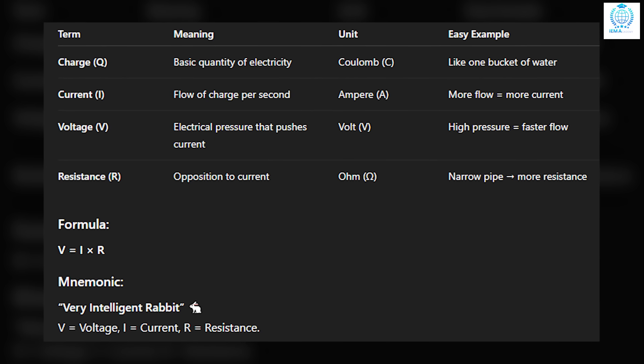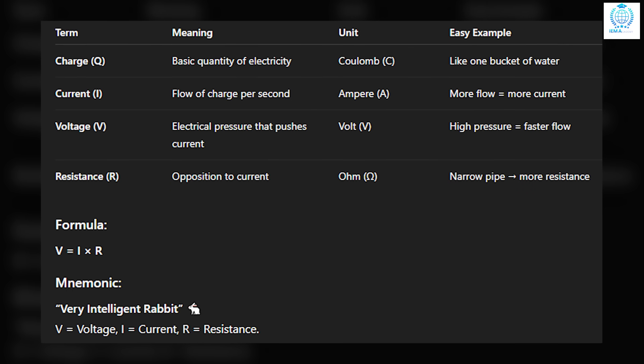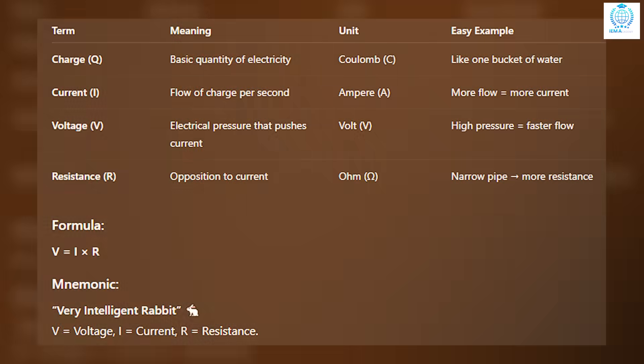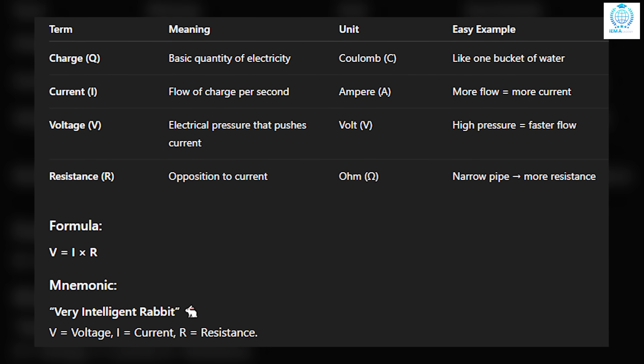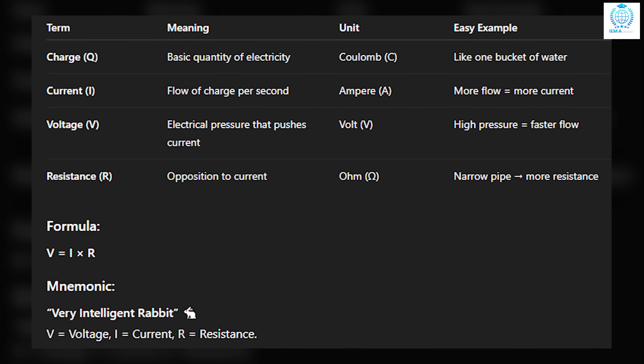Voltage, represented by V, is the electrical pressure that pushes the current. Its unit is the volt. Higher pressure means faster flow. Resistance, represented by R, is the opposition to current. Its unit is the ohm, like a narrow pipe giving more resistance.